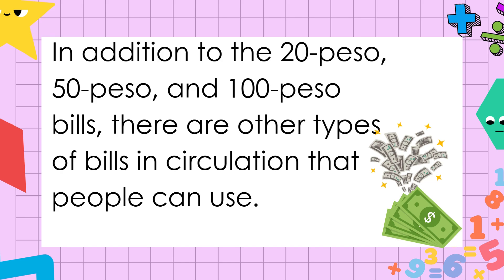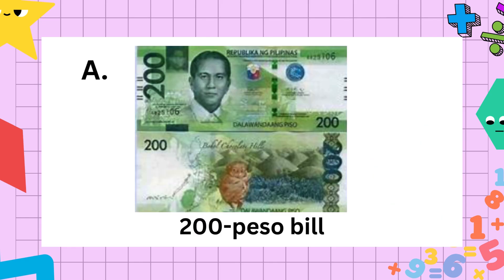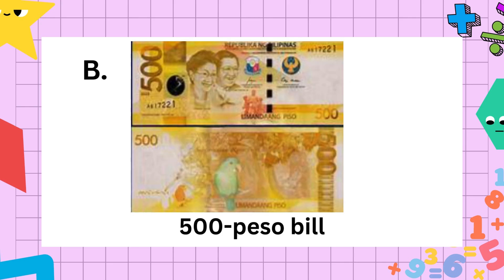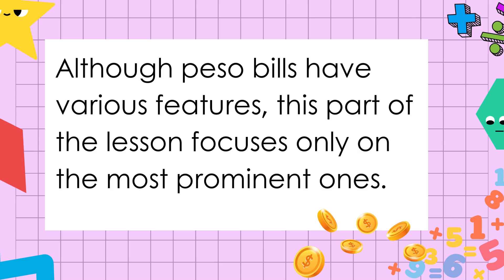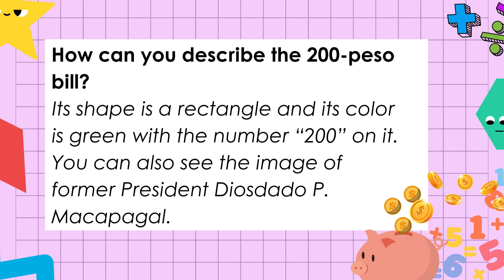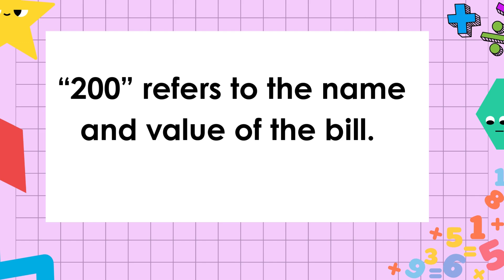In addition to the 20 peso, 50 peso, and 100 peso bills, there are other types of bills in circulation that people can use. Grade 2, this is the 200 peso bill, this one is the 500 peso bill, and this is the 1,000 peso bill. Although peso bills have various features, this part of the lesson focuses only on the most prominent ones. How can you describe the 200 peso bill? Its shape is a rectangle, and its color is green with the number 200 on it. You can also see the image of former President Diosdado P. Macapagal. When we say 200, it refers to the name and value of the bill.